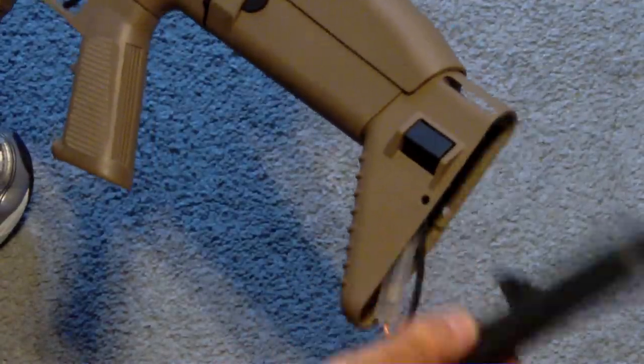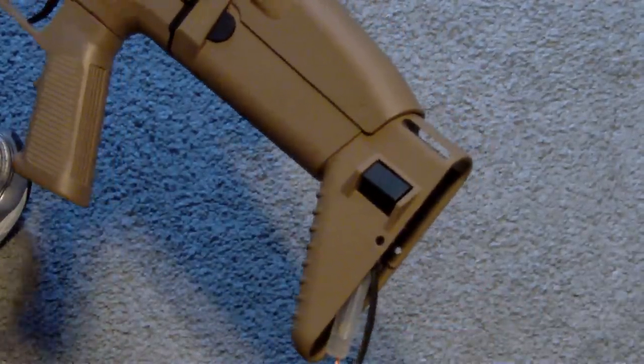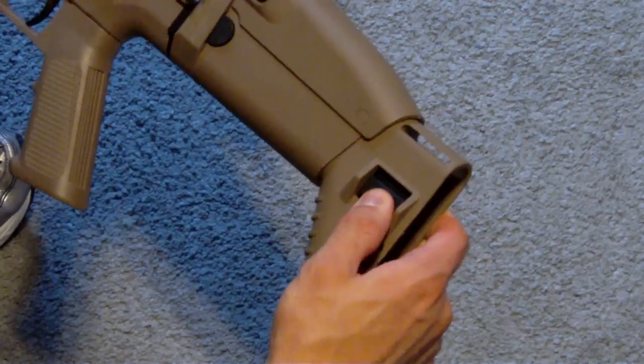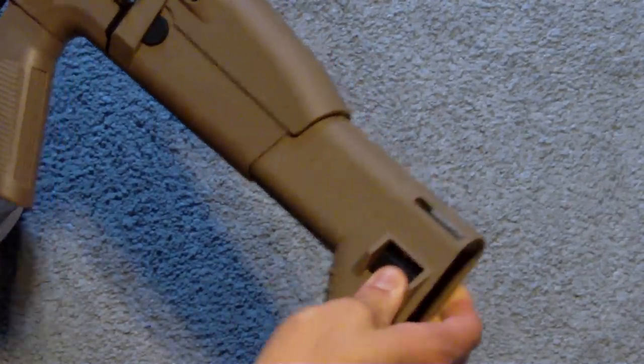Then, you just pull the butt plate right off, press down the button to retract the stock, and fully extend it.